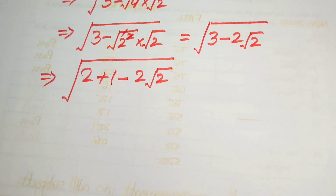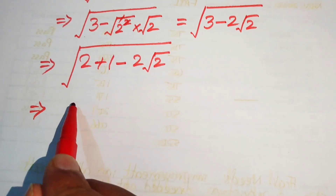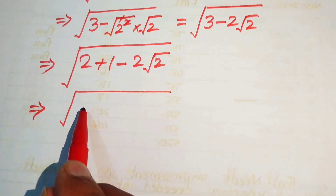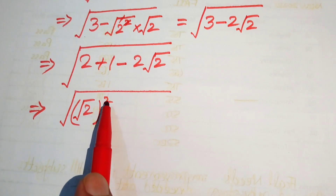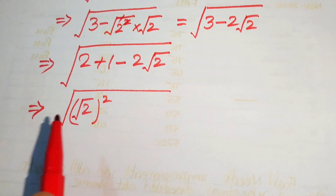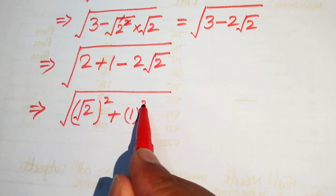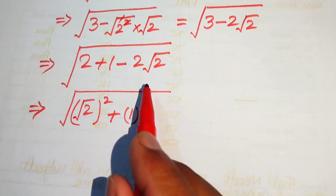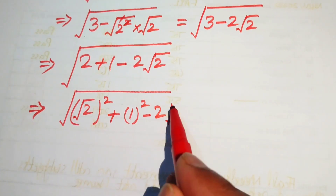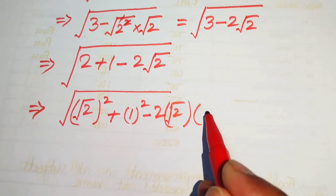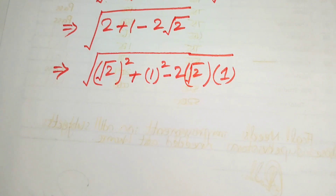Here we use another radical law: you can take square and radical of the same term at the same time, and it will be written as square root of 2 squared. The 2 and the square root cancel, giving just 2. This is plus 1 squared, and this is minus 2 times square root of 2 times 1.